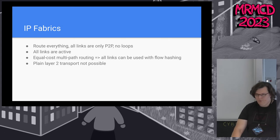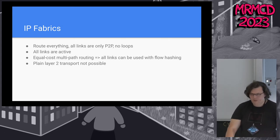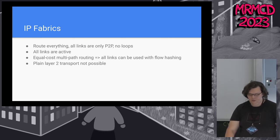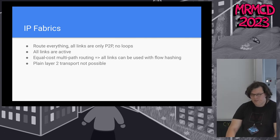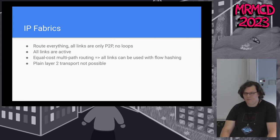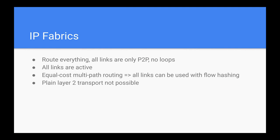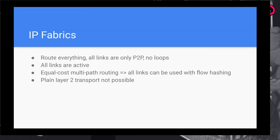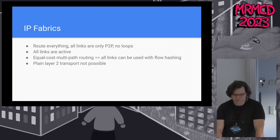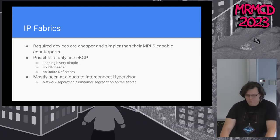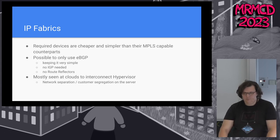A different technology is IP Fabrics. The idea is to route everything — I only have Ethernet on point-to-point links. All links can be used since we use routing, all links can be used in active mode, I don't have to disable any ports. Hashing gives me the possibility to use all links when the path is equal. The big disadvantage is that plain Ethernet transport is not possible, so most customers and most access networks don't work in this setup. They are mostly cheaper than MPLS-capable devices.